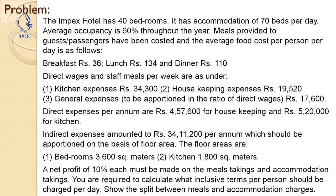The cost has to be calculated — let us discuss the question first. One hotel is running a business with 40 bedrooms and has an accommodation capacity of 70 beds per day. These are the two important pieces of information. The question is how they can calculate the accommodation part — they have 40 bedrooms with accommodation capacity of 70 beds per day.